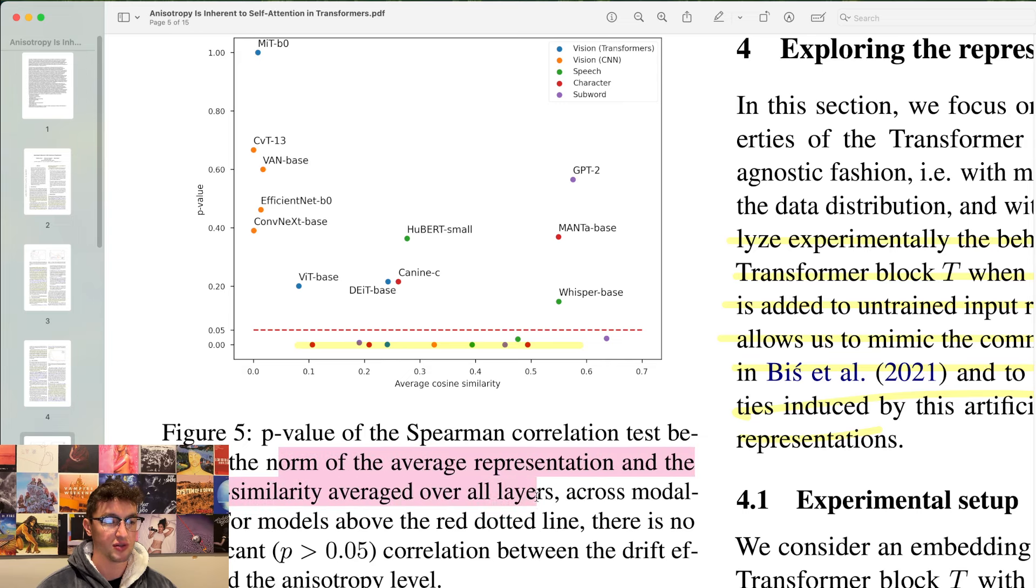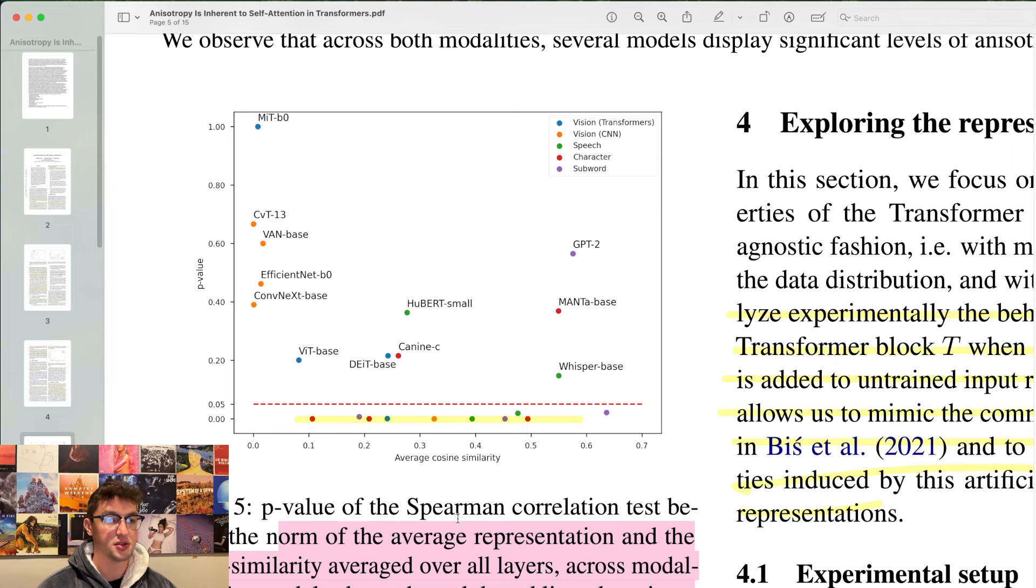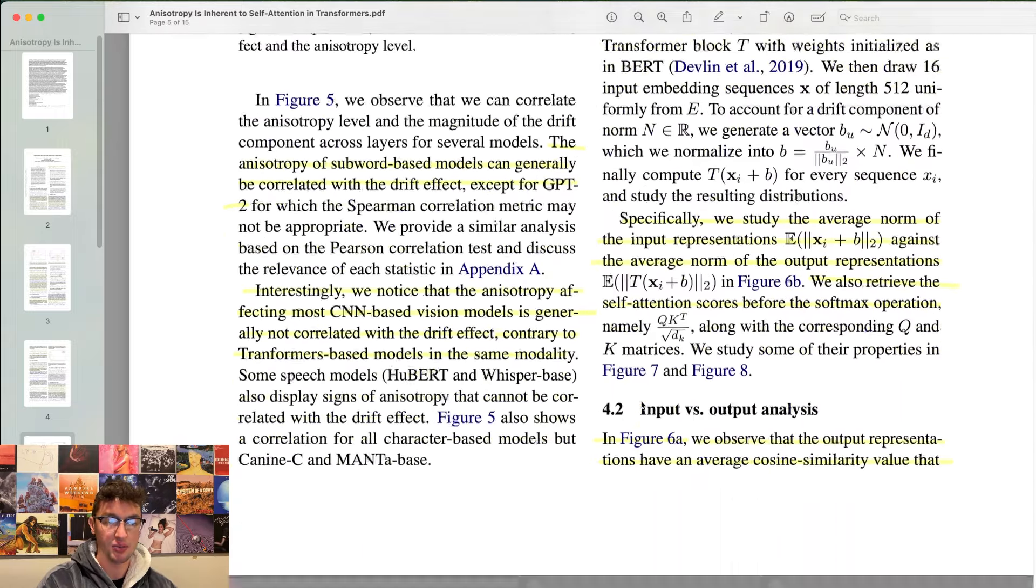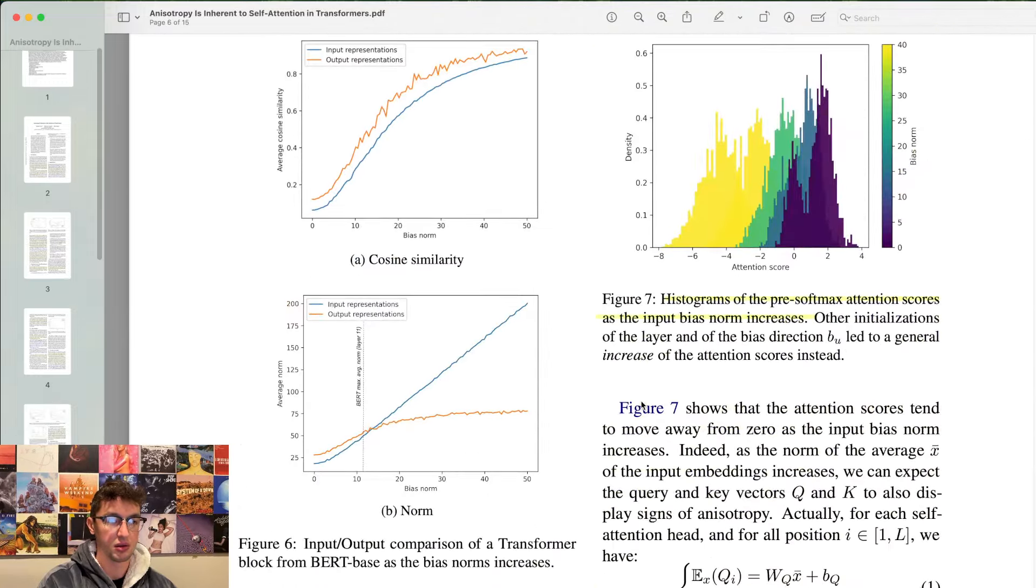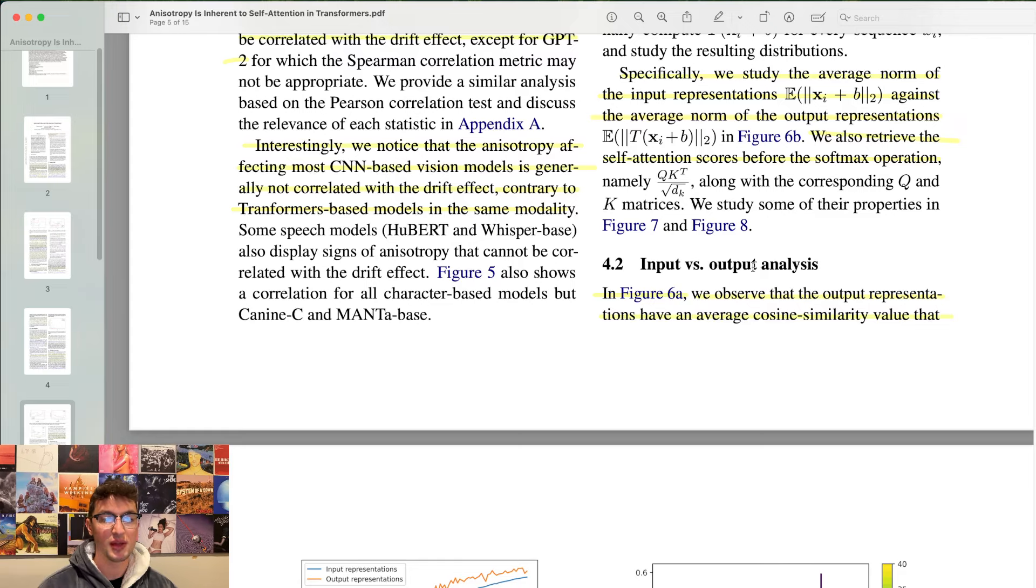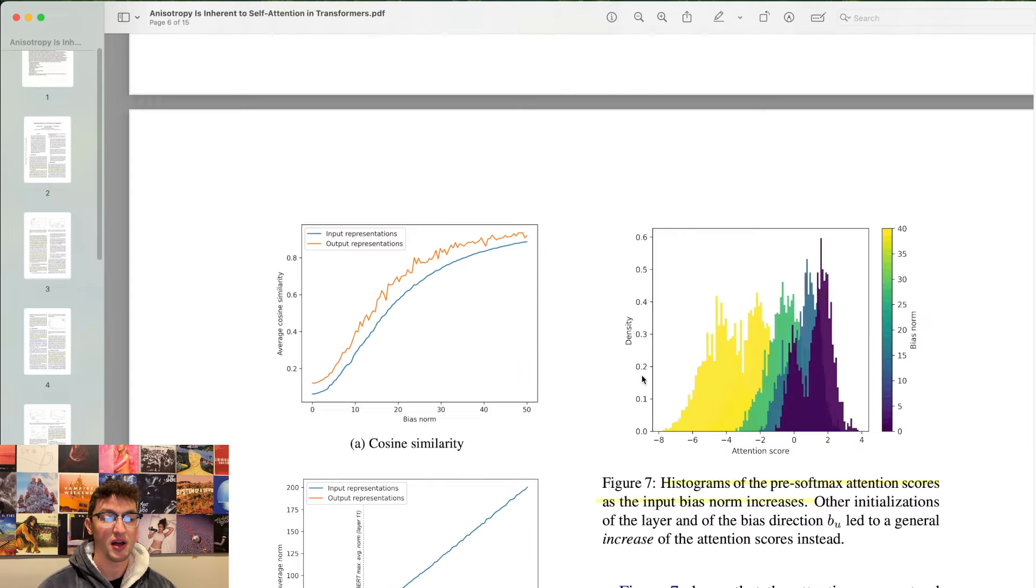P-value of the correlation test between norm of the average representation and the cosine similarity averaged over all layers. For models above the red dotted line, there is no significant correlation between drift effect and anisotropy level. Pause there if you're curious to which models are doing it. They have vision transformers, GPT-2, a bunch of things. Why are these bottom ones not labeled? Weird. I'm not sure I get that or why I highlighted it, but whatever.